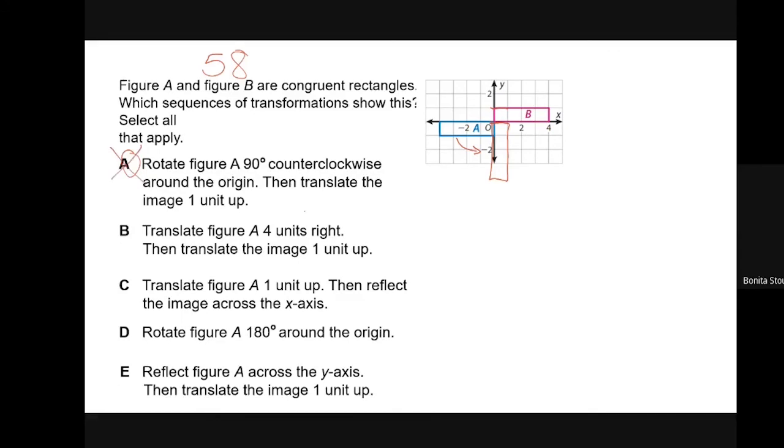The next one we have is translate A four units right, and then one unit up. So if I translate A four units right, I now have what I have in light green. And then if I move it up one unit, it matches up B. So B does work. I am going to erase my markings up here so I can do the next one. The next one I want to do is translate A up one and then reflect it across the x-axis. So if I move A up one, it is now this green rectangle. And then I reflect it across the x-axis. It's now going to go back right where it started from. So it's not this one.